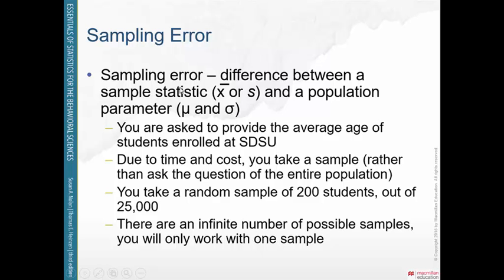Sampling error is the difference between our sample statistics — such as a sample mean x-bar or a sample standard deviation (lowercase s) — and its corresponding population parameter, which would be mu (the mean in a population) or sigma (the standard deviation in a population).